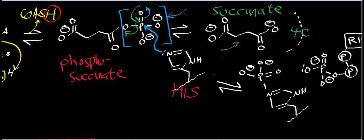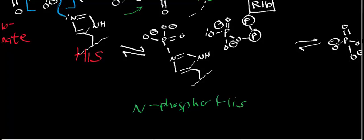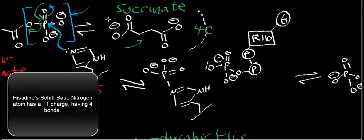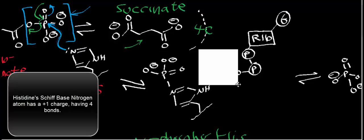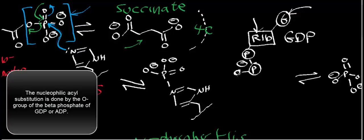Now we've generated succinate, which leaves the active site. Now we have this histidine residue in the active site in the form of an N-phosphohistidine — we have an activated phosphate. I've drawn guanosine diphosphate here. Notice that we have the ribose here, the nitrogenous base which is guanine, and then we have two phosphates.